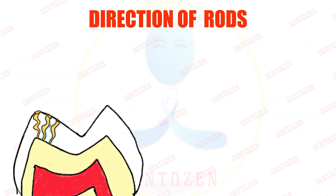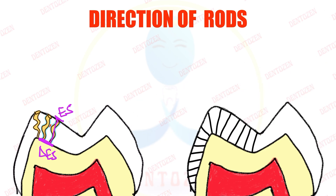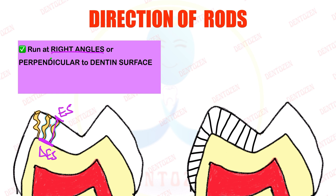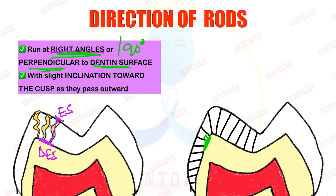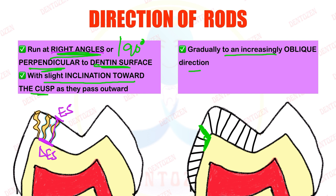These rods start their journey at the dentine surface — that is, at the dentino-enamel junction — and head outwards to reach the outer enamel surface. They start at right angles, or 90 degrees, to the dentine surface. As they pass outwards they show a slight inclination towards the cusp and gradually become more oblique.